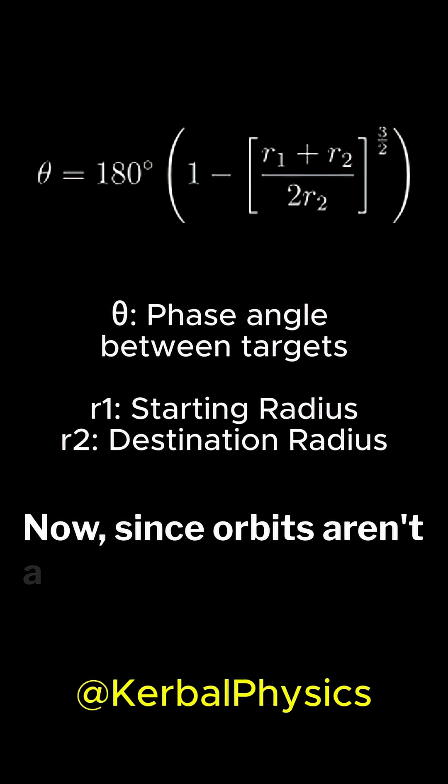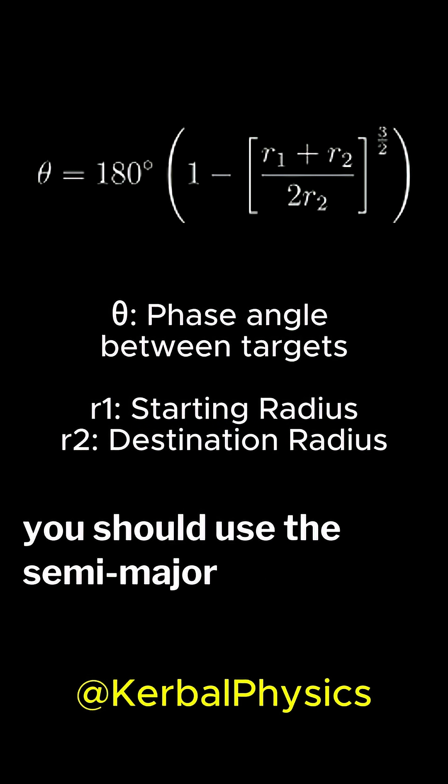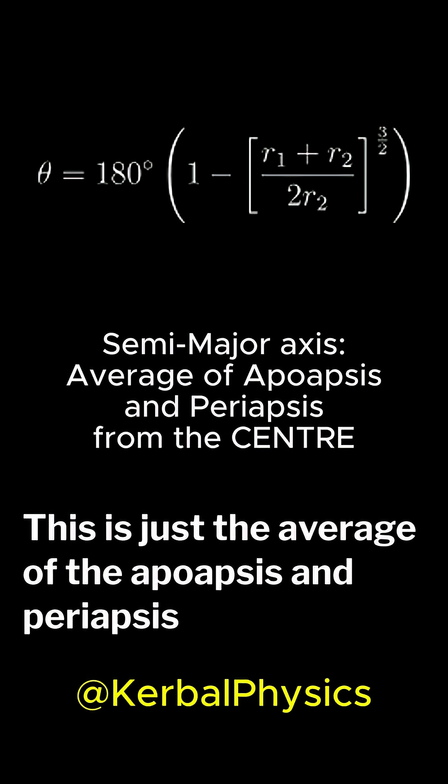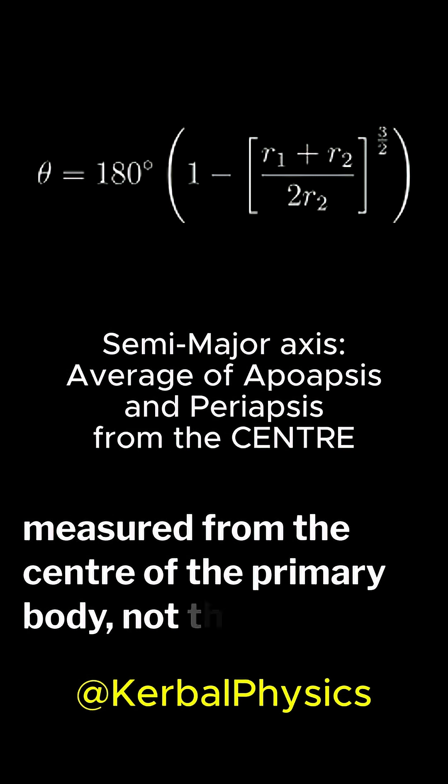Now, since orbits aren't always perfectly circular, you should use the semi-major axis for the radius. This is just the average of the apoapsis and periapsis, measured from the center of the primary body, not the surface.